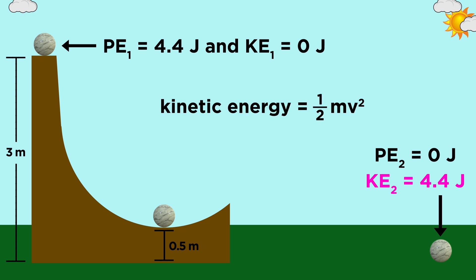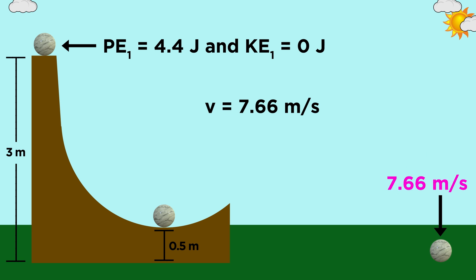Now we can use that to find the velocity of the ball at the moment of impact. Four point four kilograms meters squared per seconds squared is equal to one half the mass times velocity squared, so we simplify a bit, take the square root, and seven point six six meters per second is what we get.